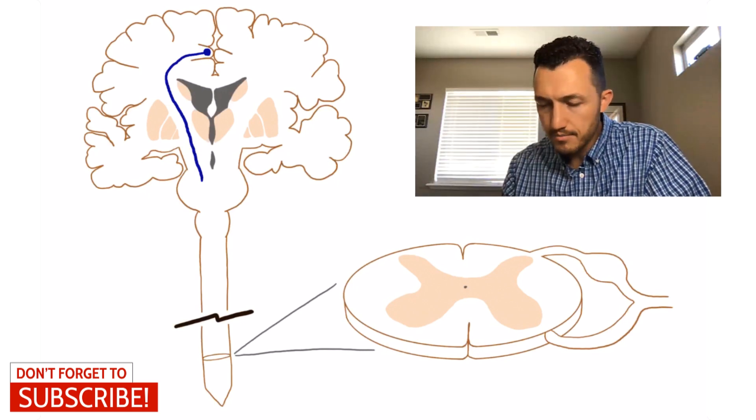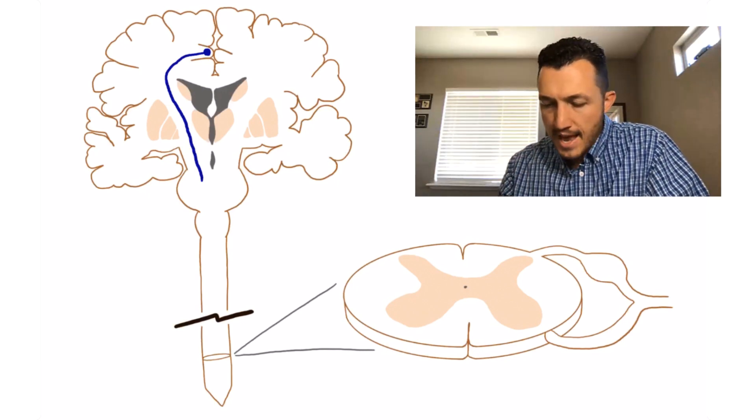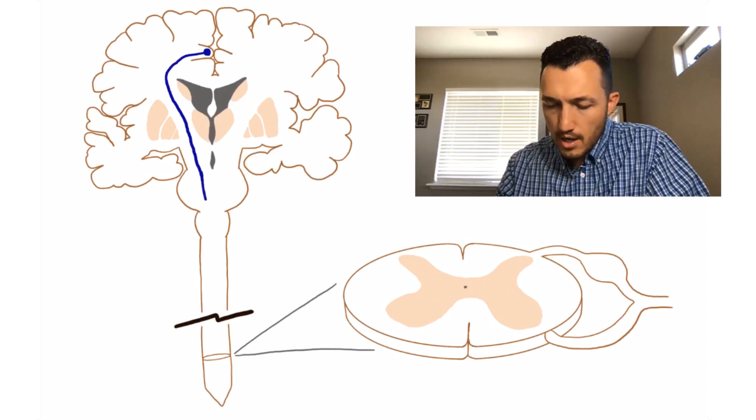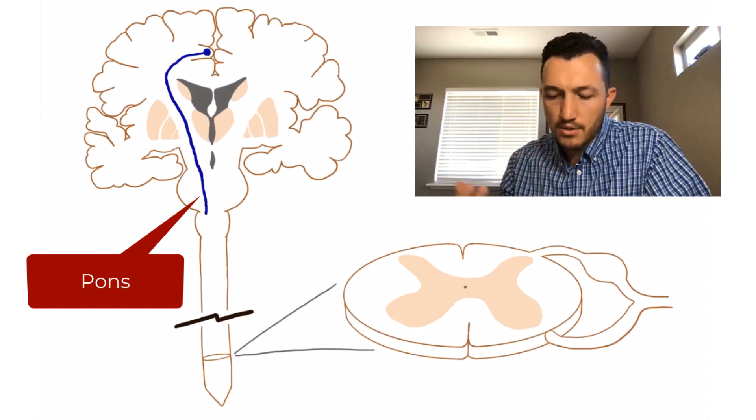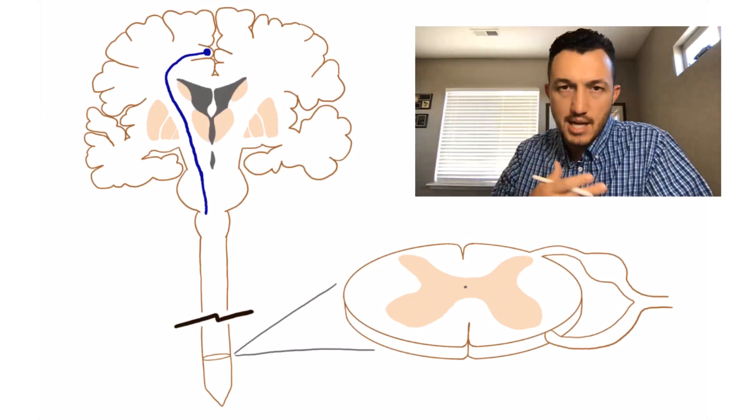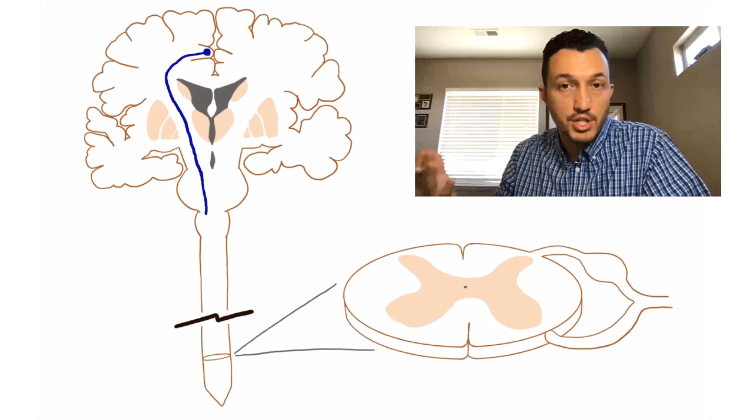Corticospinal tract passes through there. So it's a big white matter tract, right? And then it passes through the pons as well. So this is our pons. And at this point, the upper motor neuron is still on the ipsilateral side, meaning it's still on the same side of the brain and brainstem from which it originated.